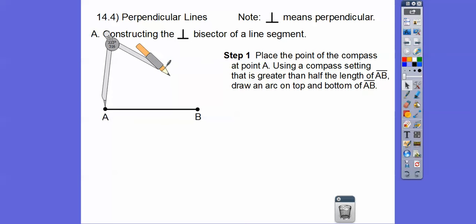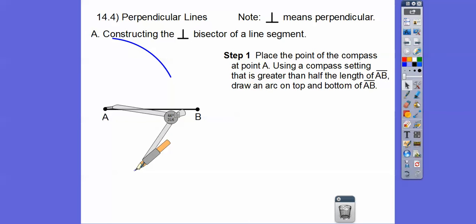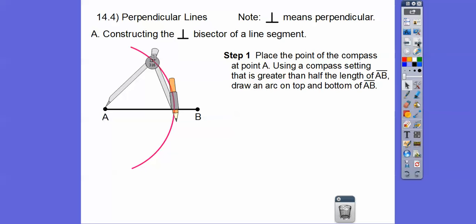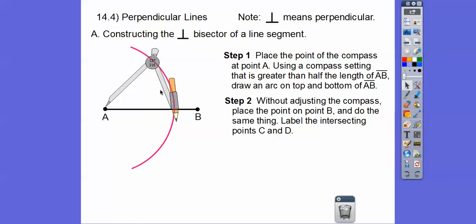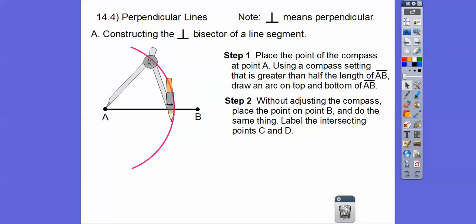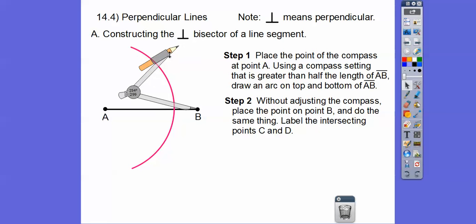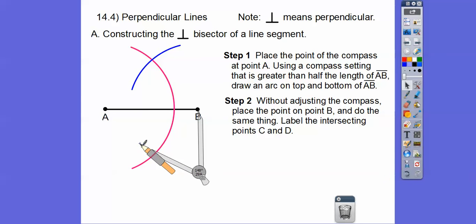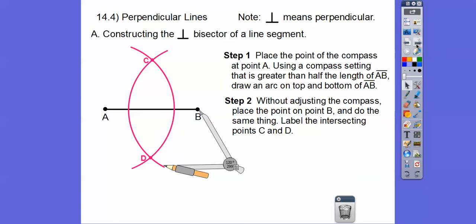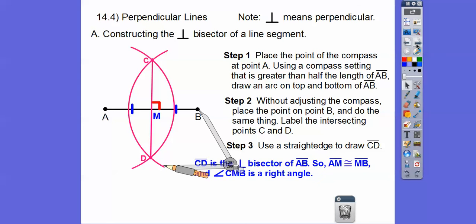We're going to draw an arc on top, then go and do the same compass opening for an arc on bottom. Then without adjusting the compass, place the pointy part over on B and do the same thing — arcs on top and on bottom. Then pick up your straight edge and connect those points to draw segment CD. We've now constructed the perpendicular bisector.